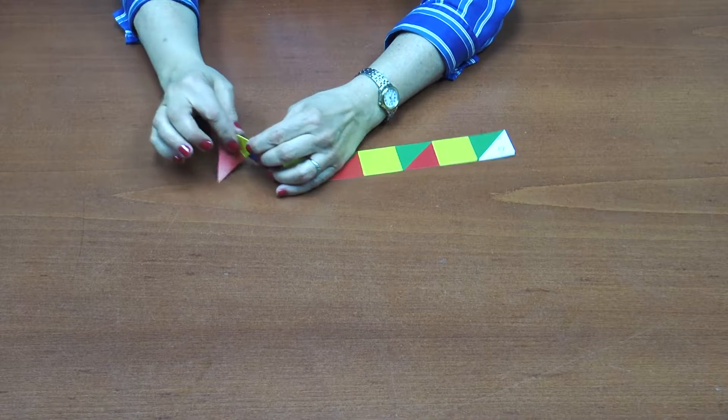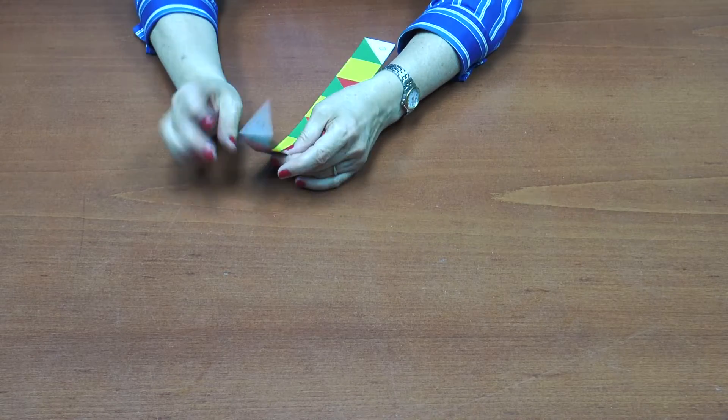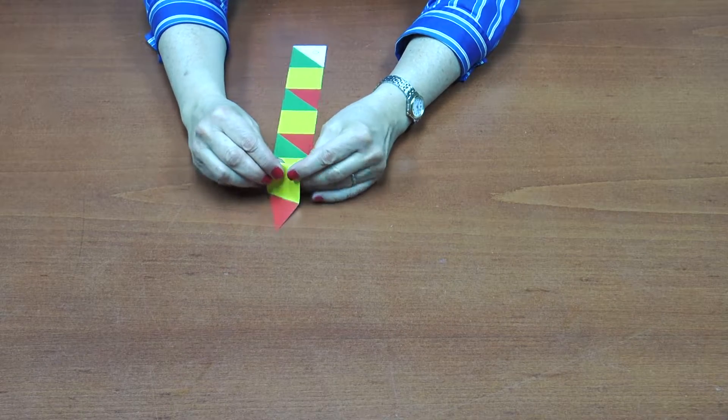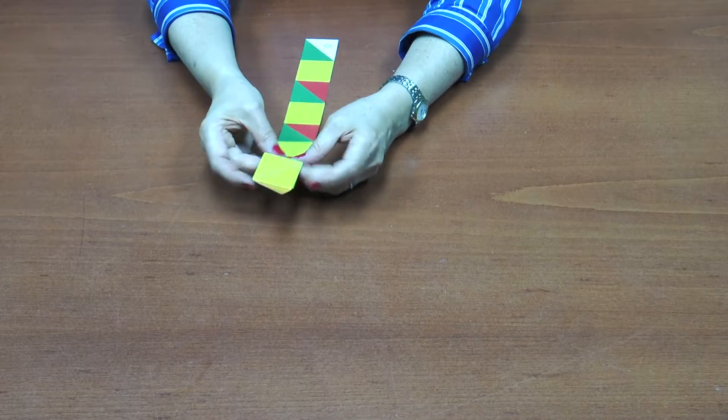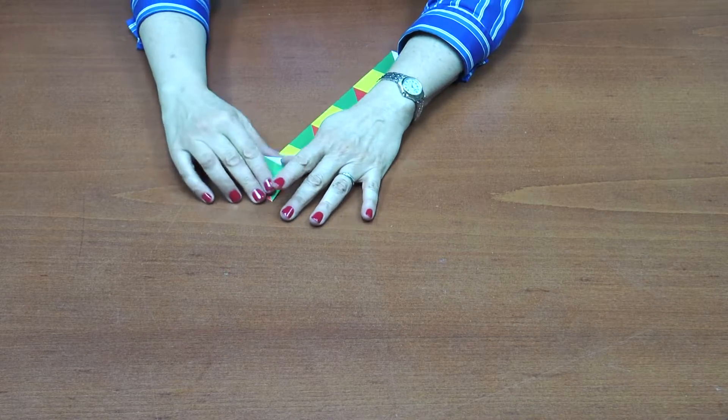And now I'm just folding along every line so that all the divisions between the triangles will flex really well.